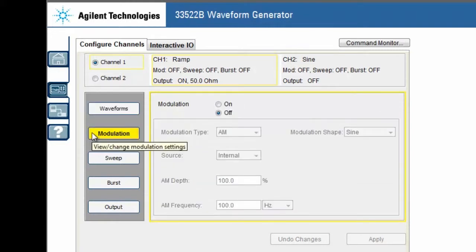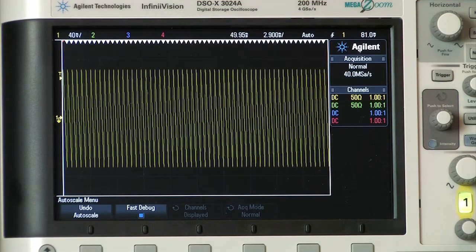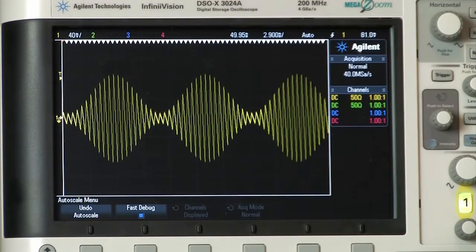Let's go to modulation. I'm going to go ahead and turn modulation on. I'm going to select AM modulation. I want an internal source. I'm going to make the depth, let's make that 80% depth, and the AM frequency of 100 hertz. Okay, so let me go ahead and apply that, and you'll see on the scope when I apply it that it goes into AM mode.